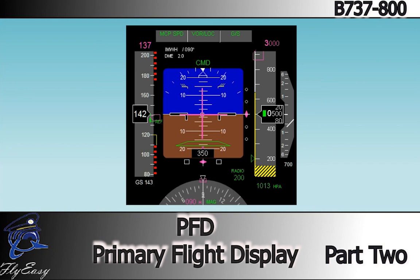This display is typical for a precision approach. The ILS station ID, course, and DME are all displayed in the upper left of the PFD. The localizer and glide slope deviation scales and pointers are now in view. Note the FMA modes displayed here show the engaged modes in green.